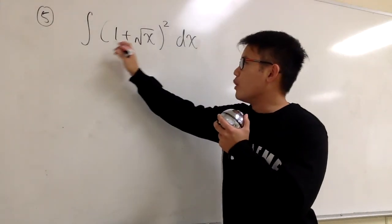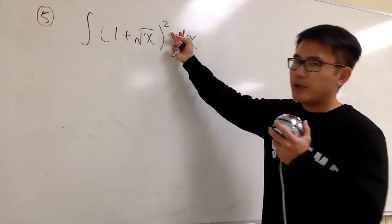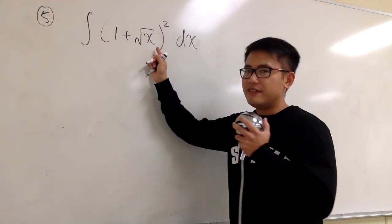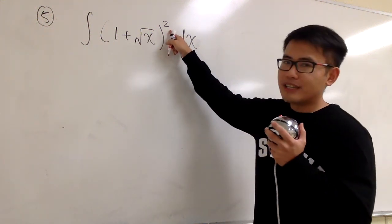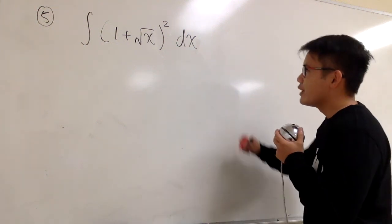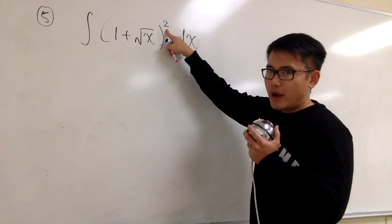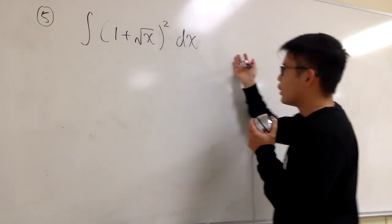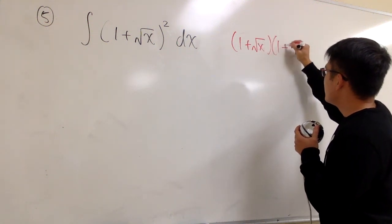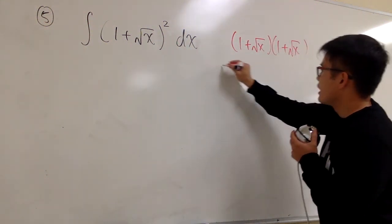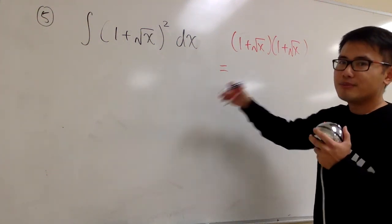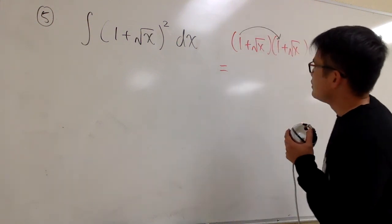Number 5: we have the integral of 1 plus square root of x, in parentheses, raised to the second power, dx. The square root of x is affected by the square on the outside — be sure to do the algebra first before we can do calculus. What we have to do is write this down twice and multiply it out: 1 plus square root of x, times 1 plus square root of x.